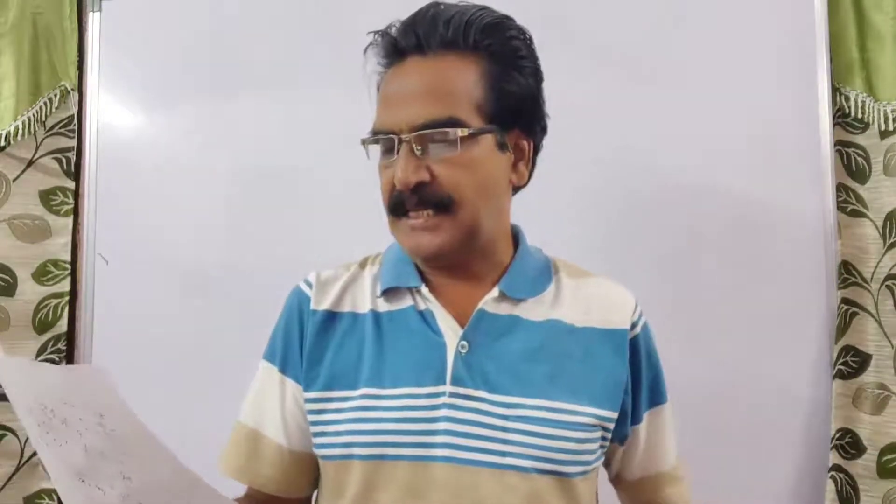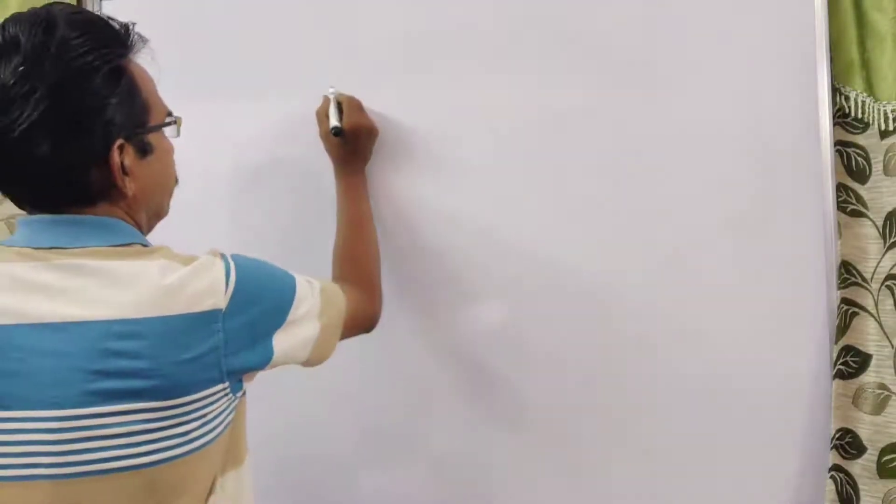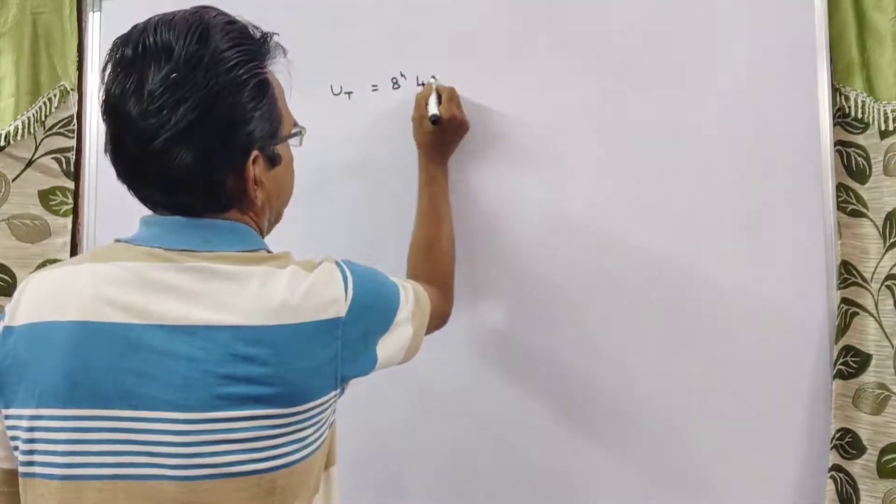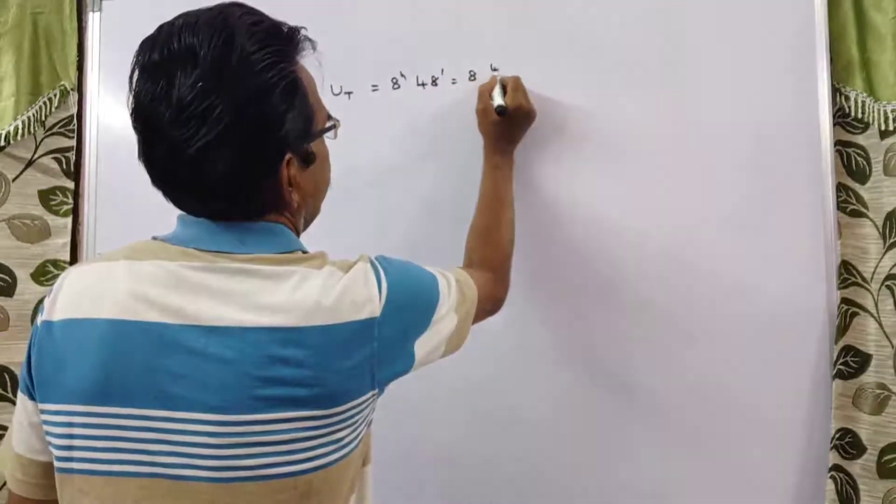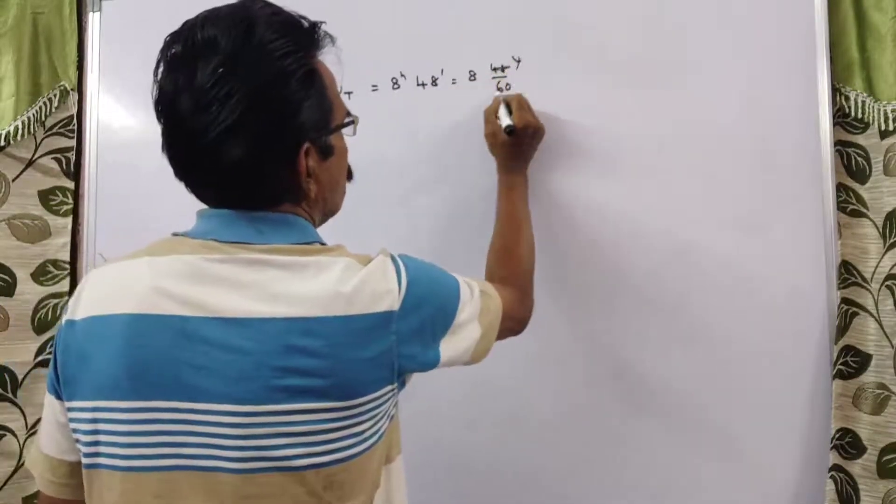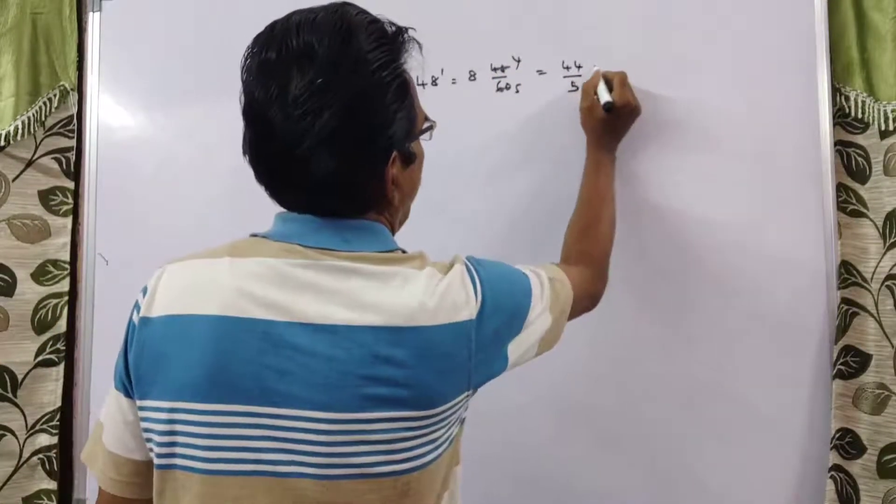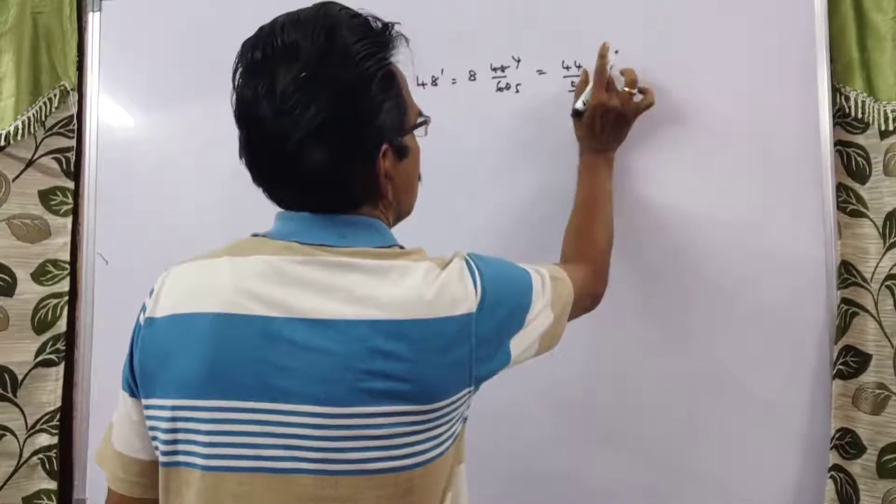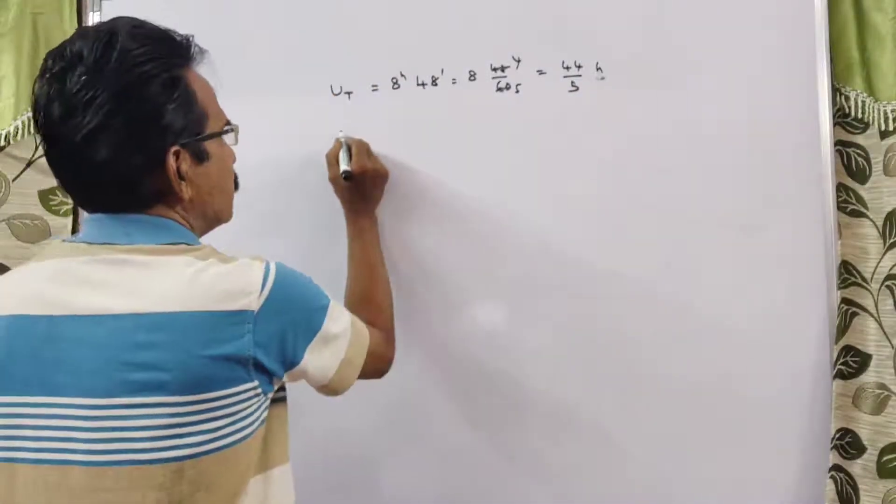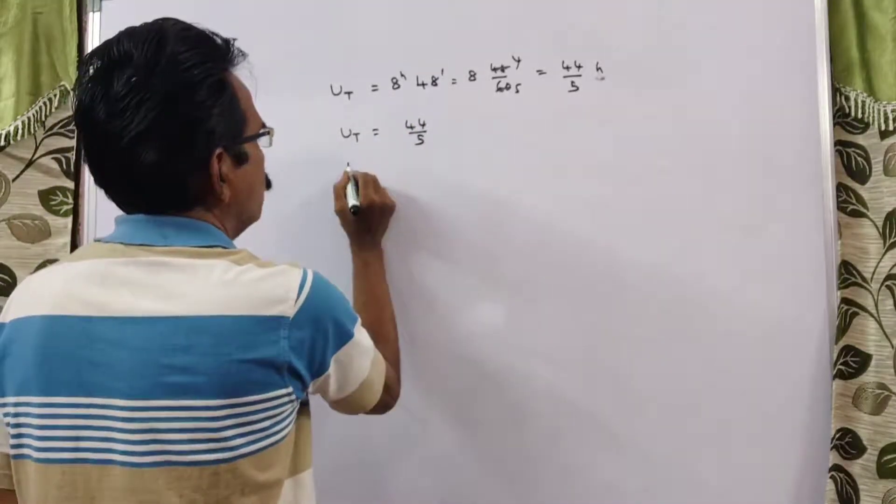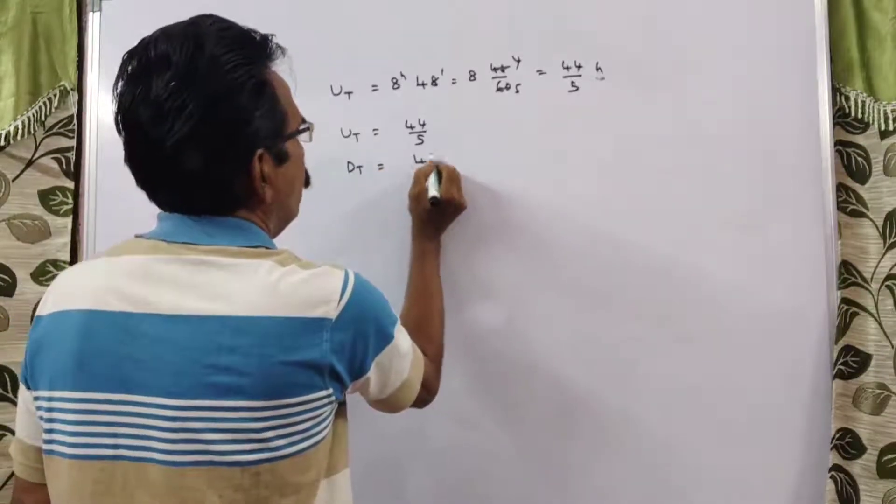While it takes 4 hours to cover the same distance running downstream. Upstream time is equal to 8 hours 48 minutes, that is equal to 8 plus 48 by 60, which is 44 by 5 hours. So upstream time is 44 by 5 hours and downstream time is 4 hours.